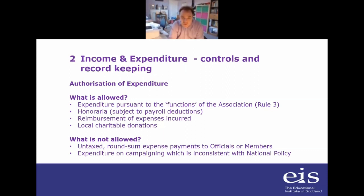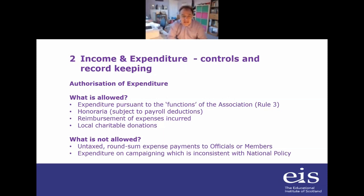Rule three is the key thing. Expenditure must be pursuant to the functions of the association. So there's a list of what the key functions of an EIS local association are, and fundamentally, expenditure has to be consistent with those functions.